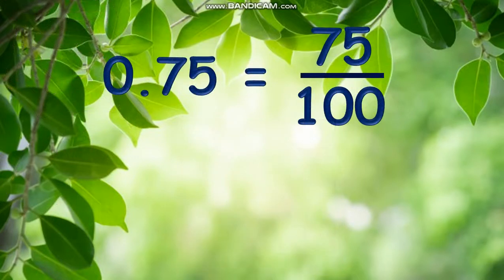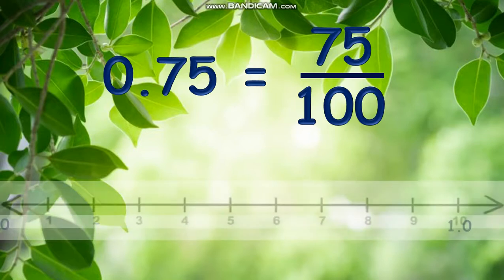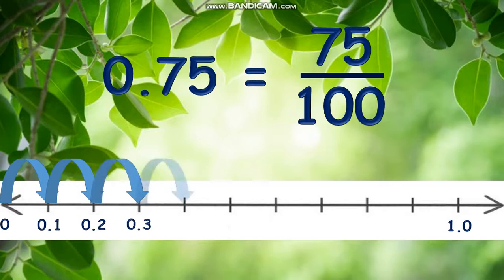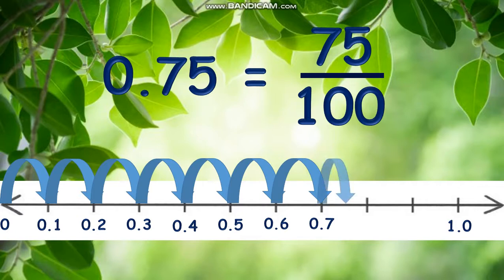To represent 0.75 or 75 hundredths on a number line, divide the segment between 0 and 10 into 10 equal parts. The arrow jumps 7 and a half equal parts from 0 to where it points, landing at 0.75 and equal to 75 hundredths or 3 fourths in fraction form.